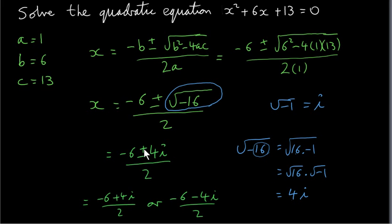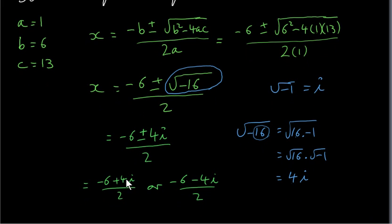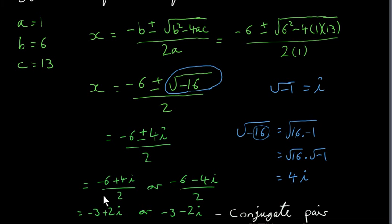So we get two solutions depending on whether we take the plus or minus sign. Taking the plus sign, the solution is minus 6 plus 4i over 2, which splits into minus 6 over 2, which is minus 3, plus 4i over 2, which is plus 2i. Taking the minus sign, the solution is minus 6 minus 4i over 2, giving minus 3 minus 2i. Notice that we have a conjugate pair: the complex conjugate of minus 3 plus 2i is minus 3 minus 2i, obtained by changing the sign of the imaginary part.